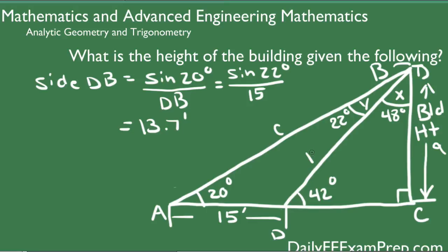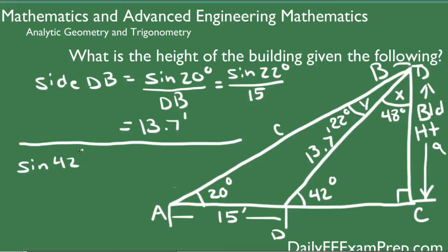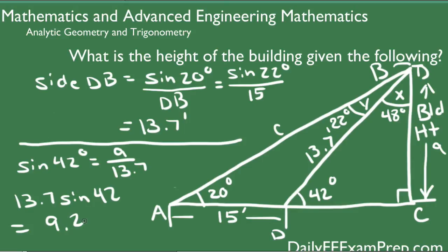Now we know side DB is 13.7 feet. We can use our regular right-hand triangle formulas to solve for missing side A. We've got 42 degrees, our hypotenuse of 13.7, and we're missing the height of the building. Sine of 42 degrees equals opposite over hypotenuse, so sine 42 equals A over 13.7. Therefore, 13.7 times sine 42 degrees equals 9.2 feet.